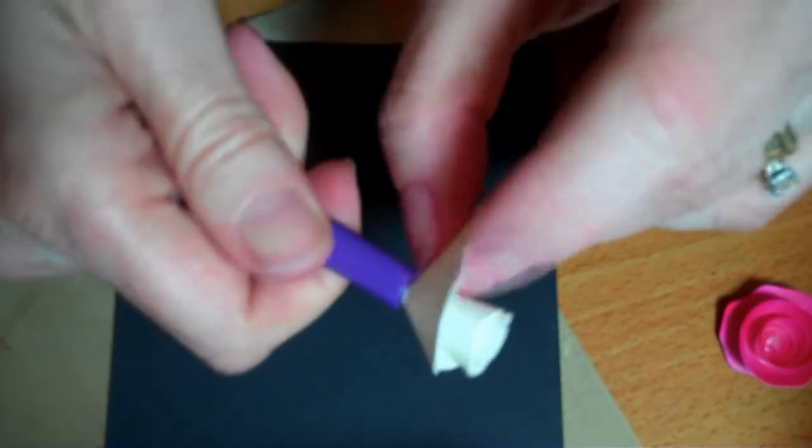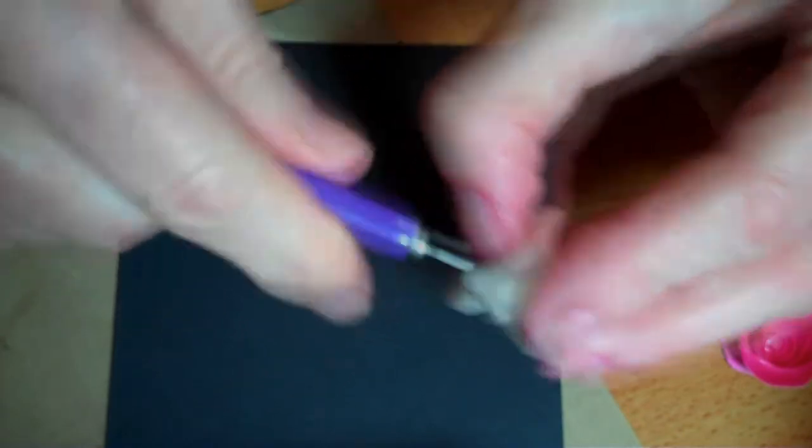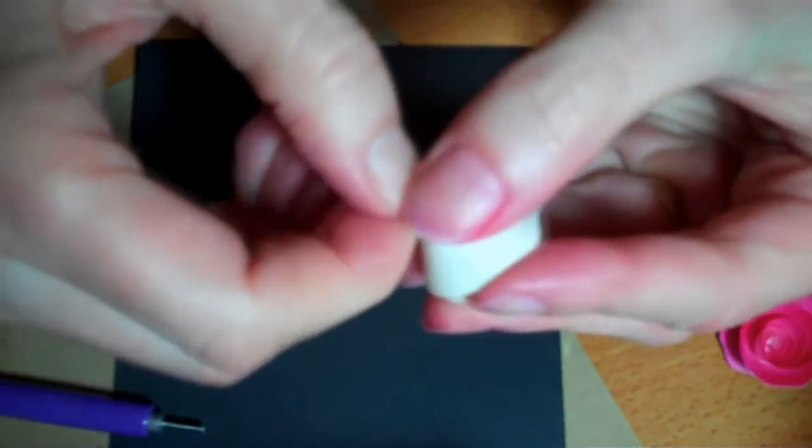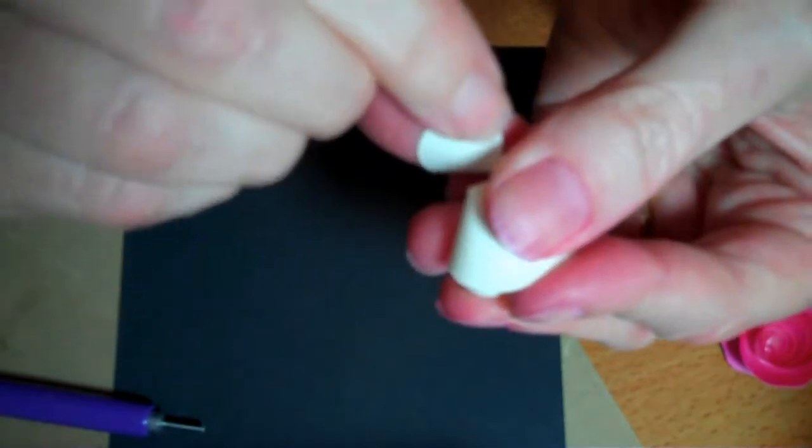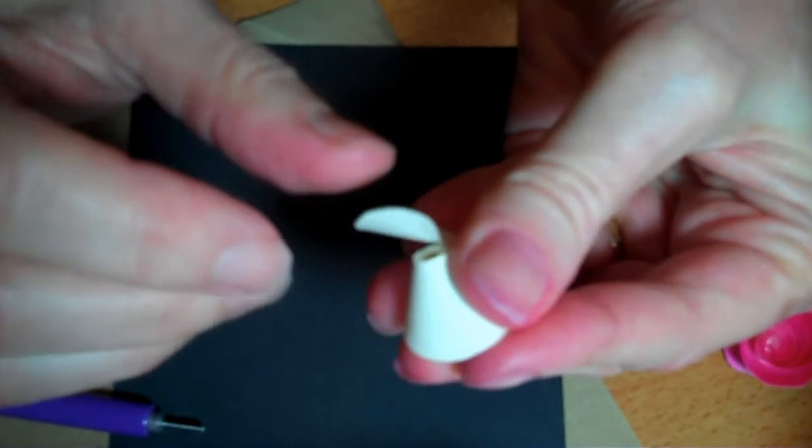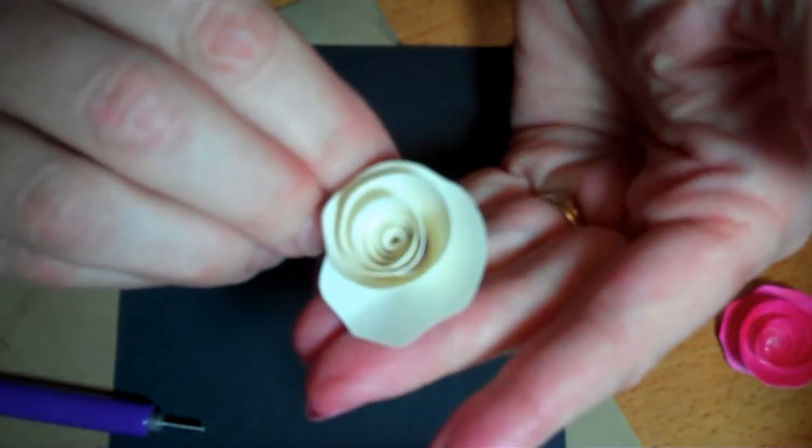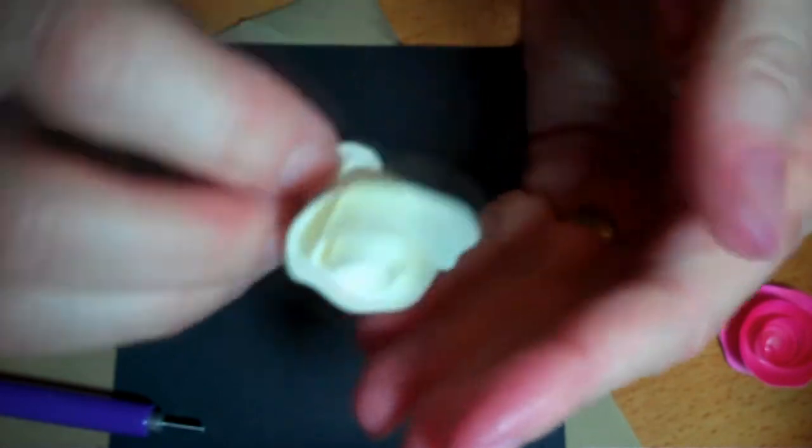And when you're done, come in tight there. You gently pull the tool out. Flip this back a little bit. And then you kind of let it sit for a bit, and then you let it go. And there we have the rose. Isn't that easy?